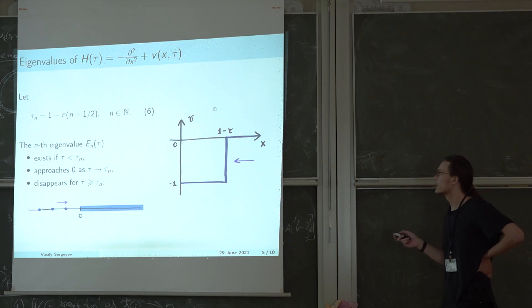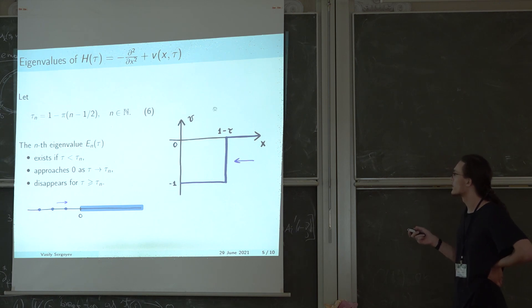So we have the stationary operator depending on time given by this formula here, where the potential is a shrinking square potential well. Let us figure something out about its eigenvalues. For each eigenvalue, there exists a critical moment of time tau n given by this formula for the nth eigenvalue.